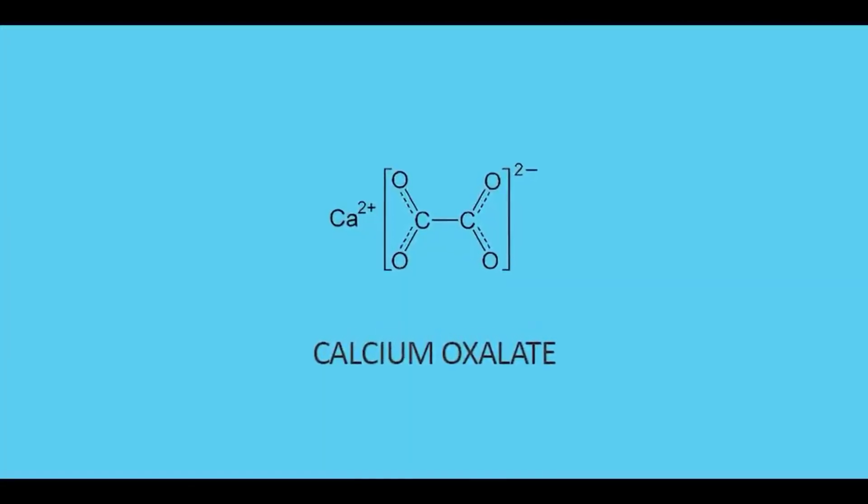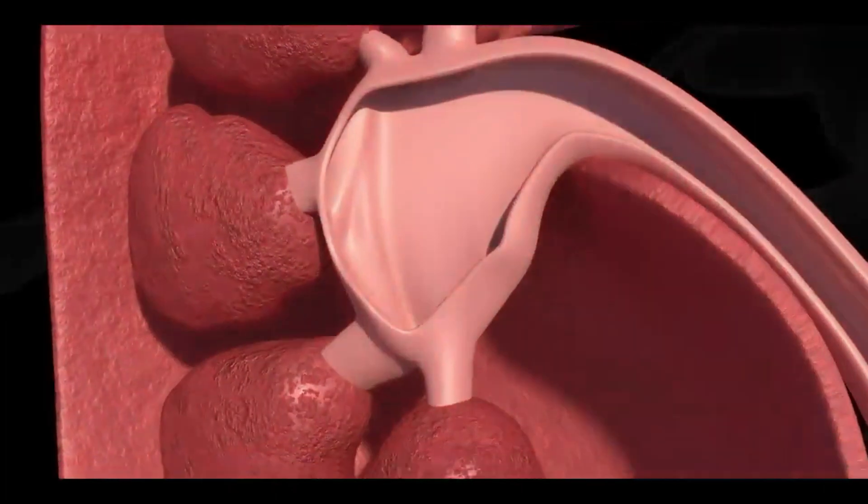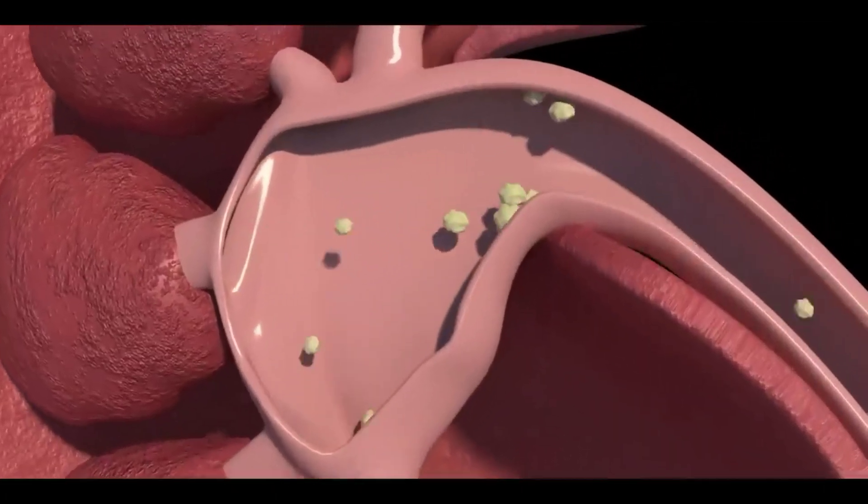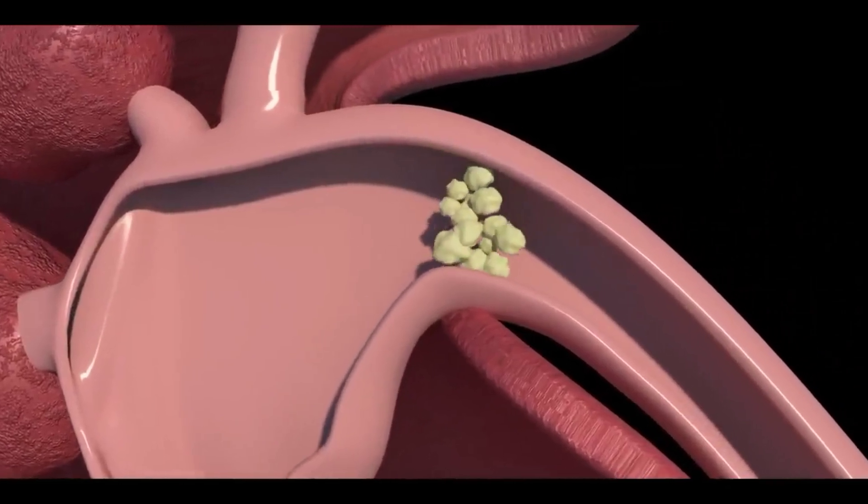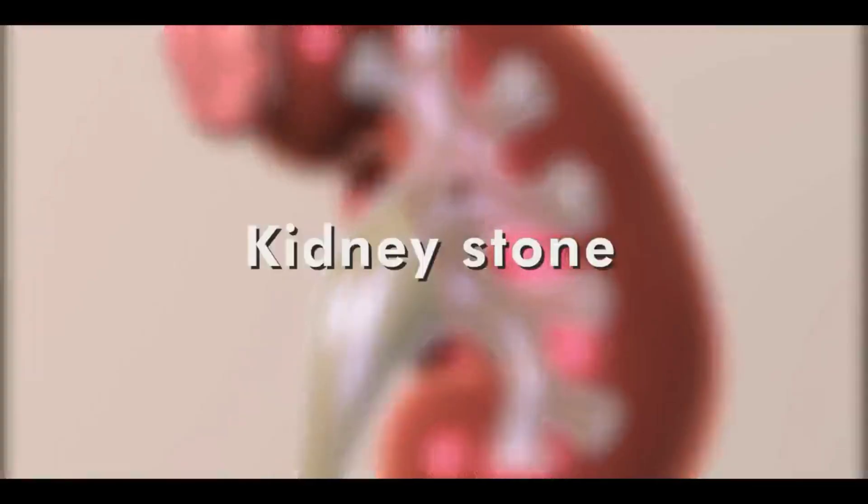If the concentration of minerals like calcium oxalate increases, these deposit in our kidneys and form crystals. These crystals or minerals combine and form a hard structure known as a kidney stone.